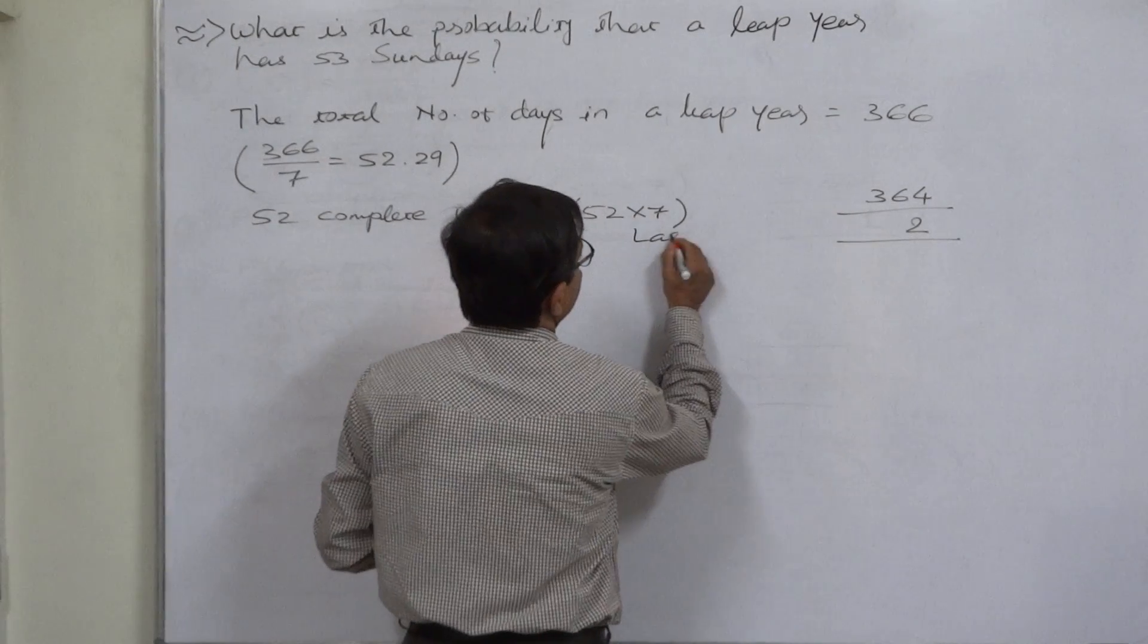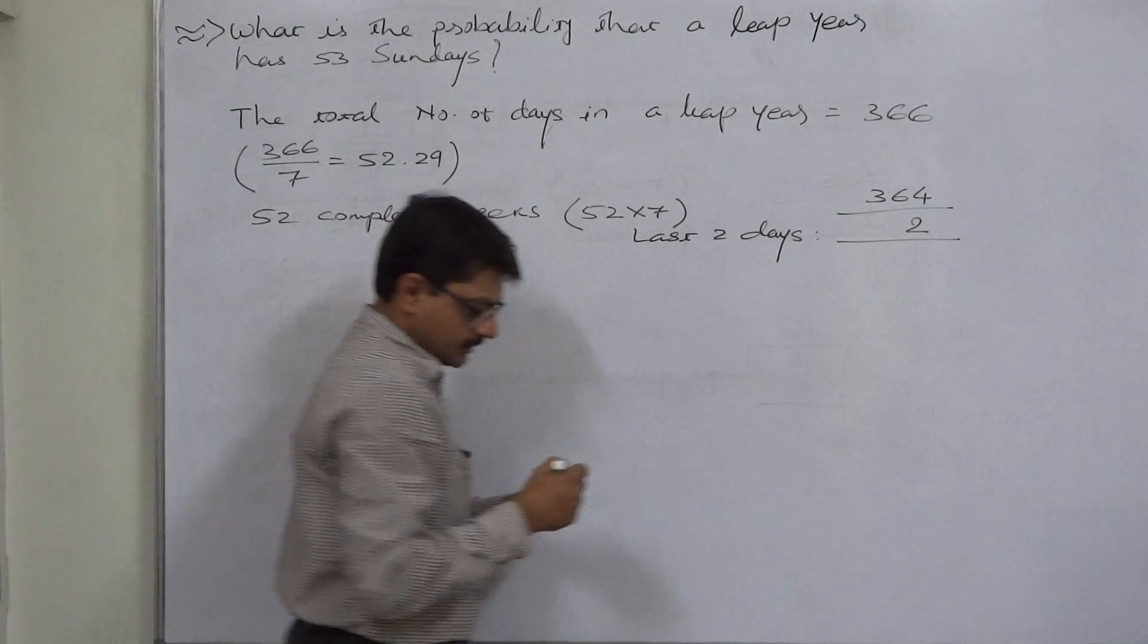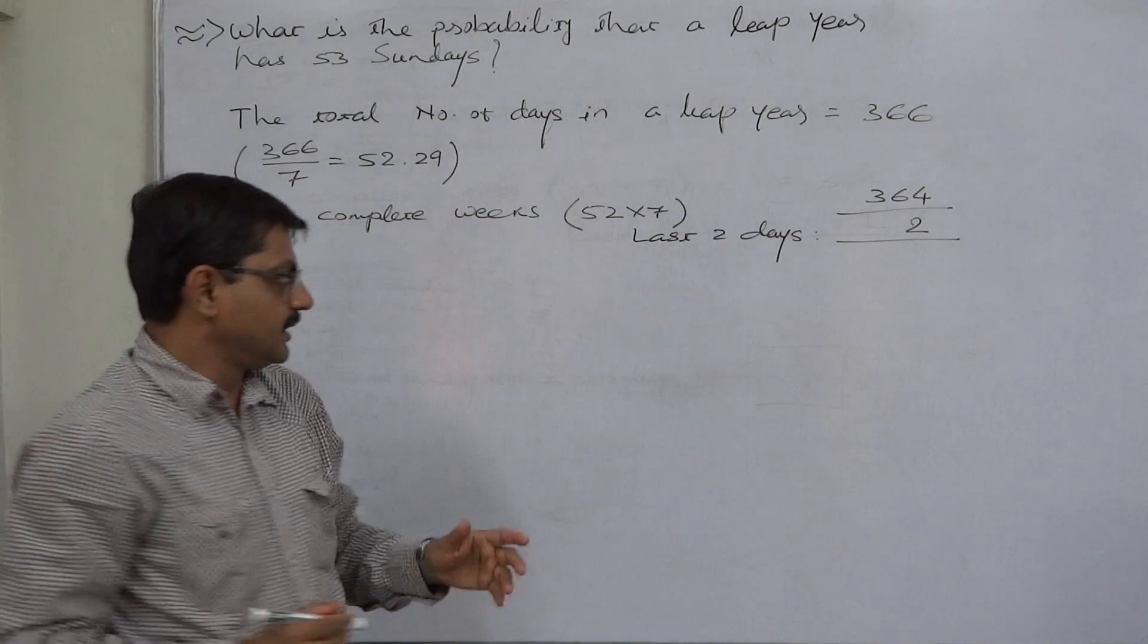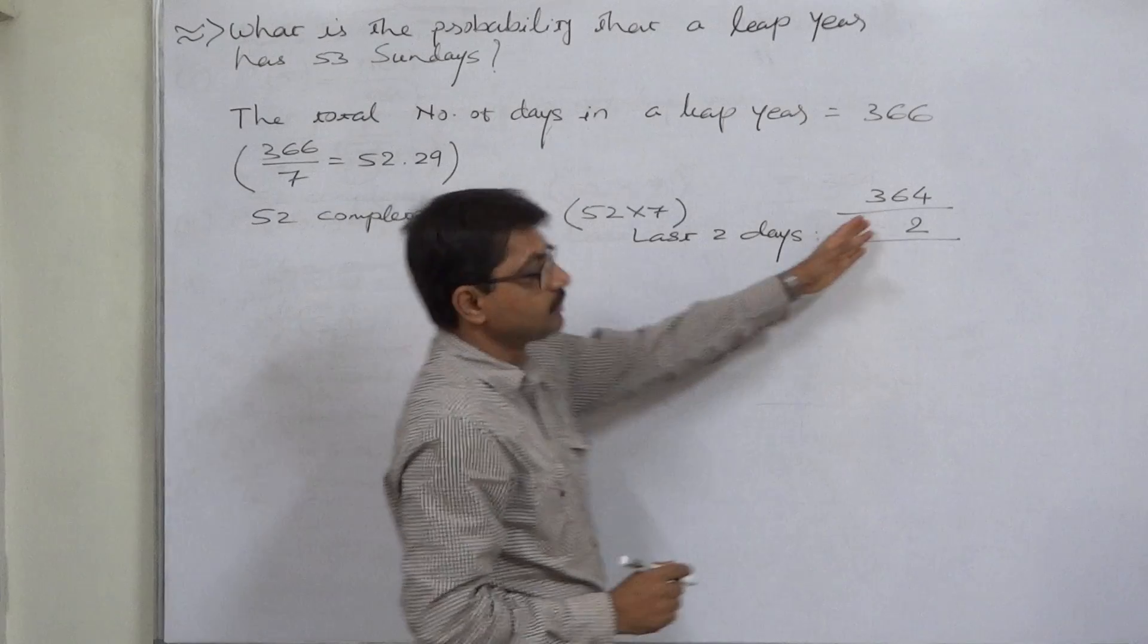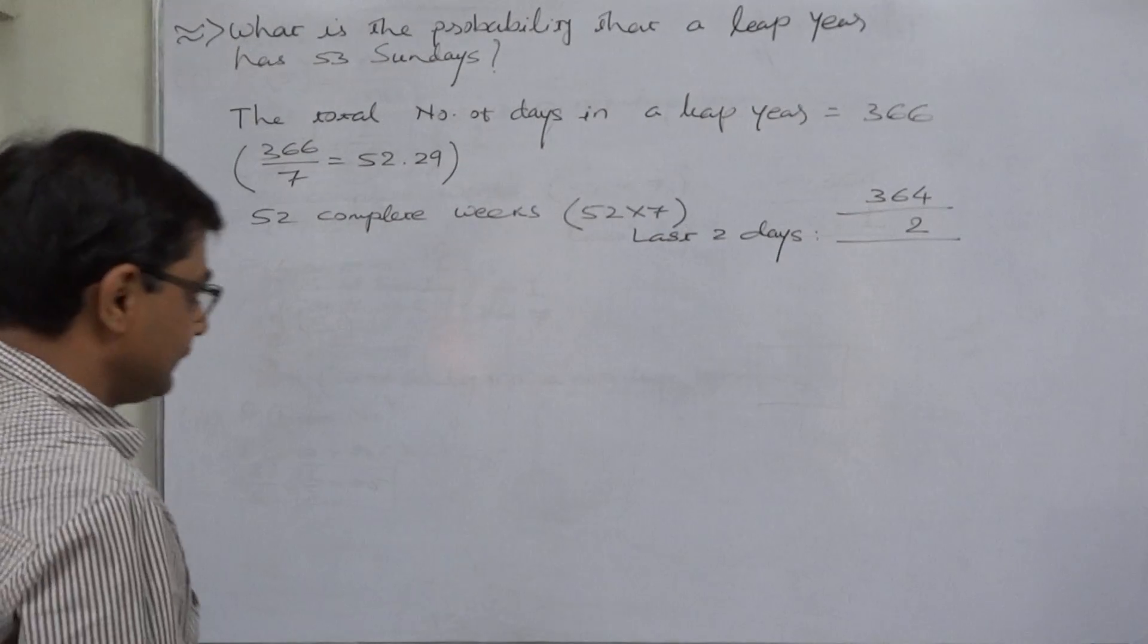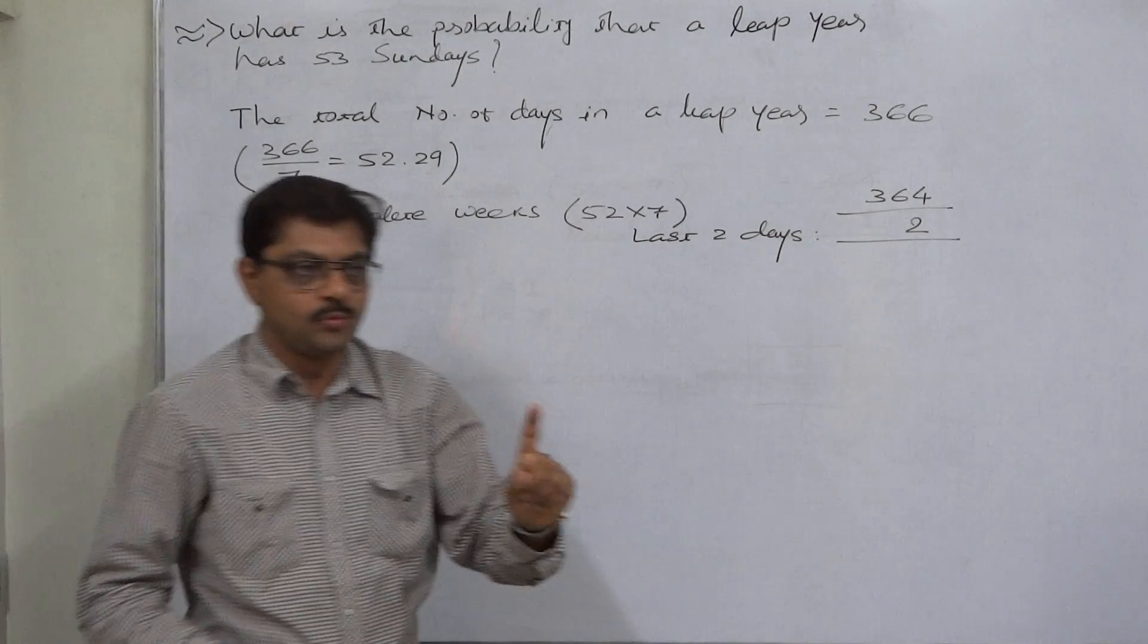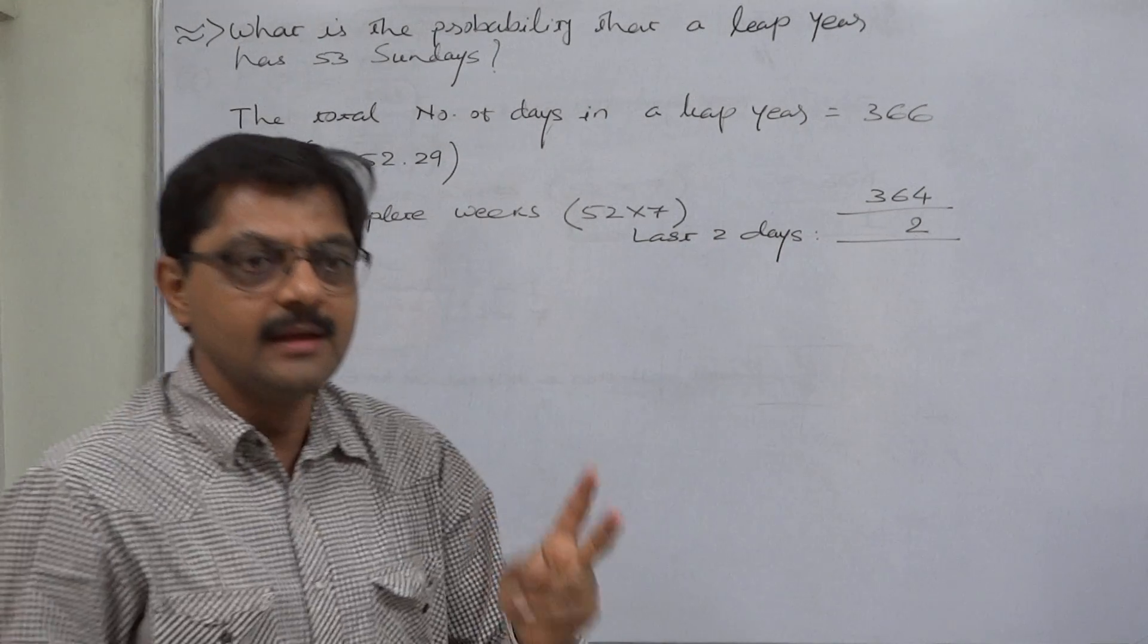Now there are two last days, 30th December and 31st December. We would like, but it is not possible to have both these days as Sundays because there can never be two consecutive Sundays.